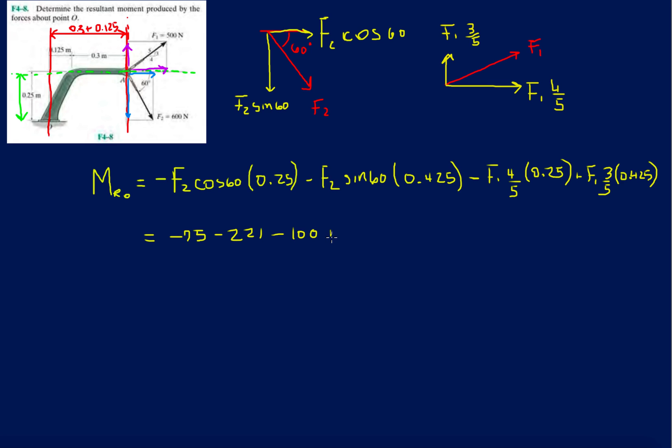And then last but not least, we have 500 times 3 over 5 times 0.425, so that's 127.5. Alright, so minus 75, minus 221, minus 100, plus that answer gives us a total of resultant moment about O of minus 268.5.